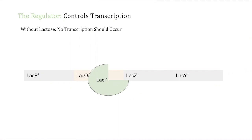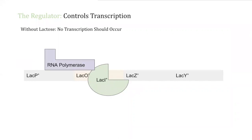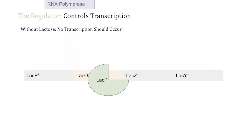Next we have the regulator, which controls transcription of the lac operon by binding to the operator. When there is no lactose present, the regulator is always bound to the operator. This blocks RNA polymerase from being able to transcribe the structural genes, so no transcription occurs.